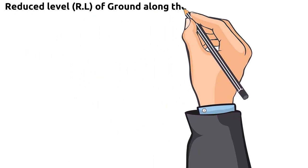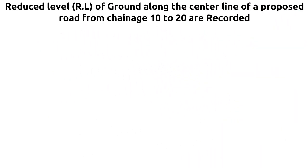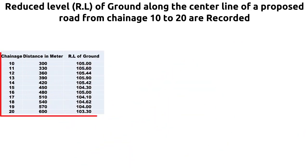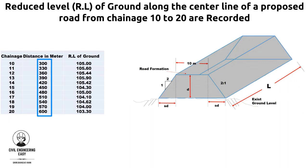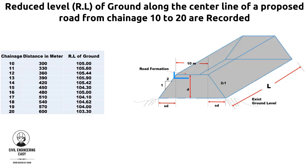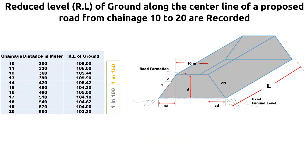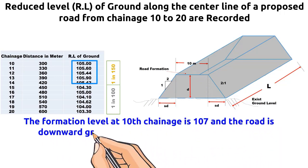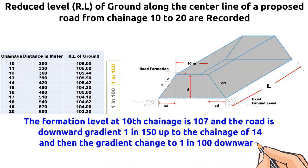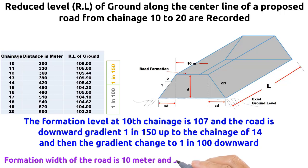The reduced level of ground was recorded along the center line of a road from chainage 10 to 20. The recorded data is shown in the table. The total length of the road is 300 meters, where data was collected at 30-meter constant horizontal distance intervals. Take a suitable reduced level of the formation line greater than the given reduced level of the natural surface level. The gradient of the formation line changes to a downward gradient of 1 in 150 up to chainage 14, then changes to 1 in 100 downward. Consider a 10-meter width of road and a side slope of banking 2:1, where 2 is horizontal and 1 is vertical.